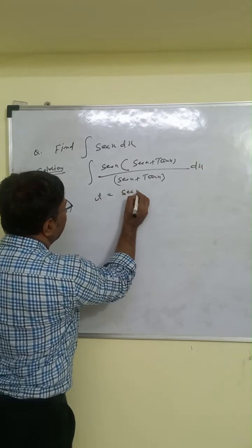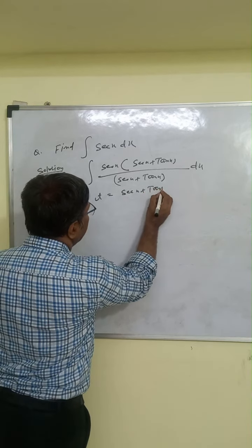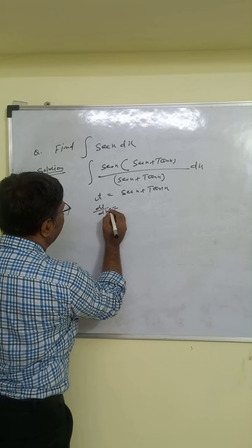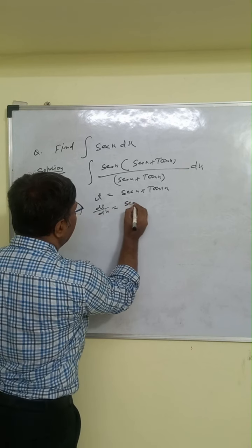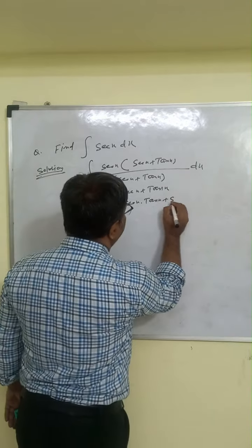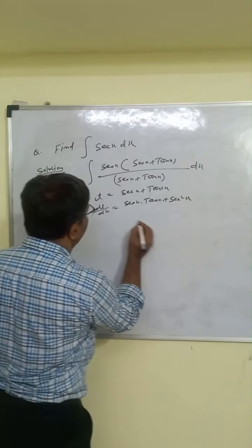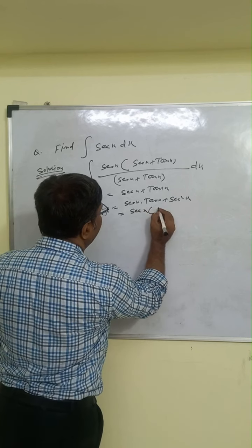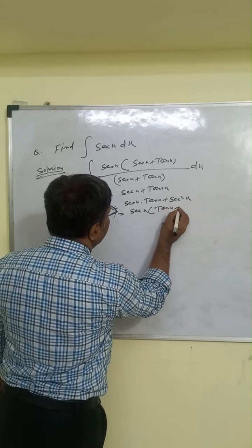So we know dt by dx equal to differentiation of sec x, which is sec x tan x, and differentiation of tan x is sec x square. If we take sec x common, we will get tan x plus sec x.